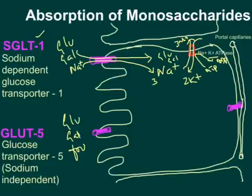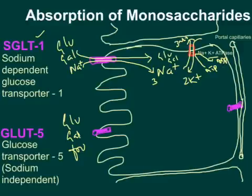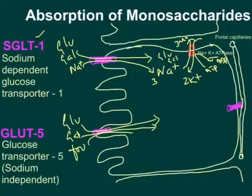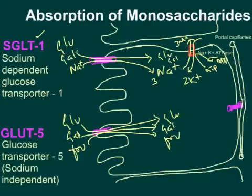There is another transporter on the brush border epithelium: GLUT5. GLUT5 is a sodium-independent, facilitated transporter that works on concentration gradient. When glucose, galactose, and fructose concentration is lower in the enterocyte cytoplasm than in the lumen, all three monosaccharides move into the cytoplasm as long as this gradient is maintained.